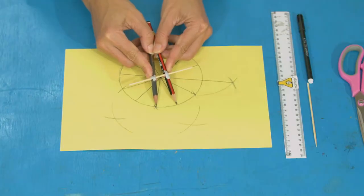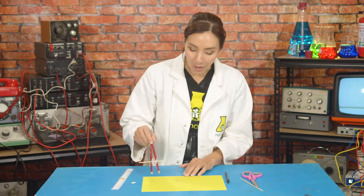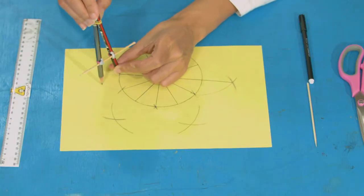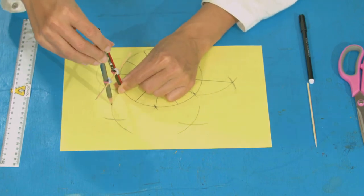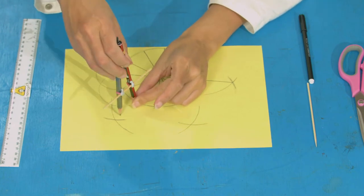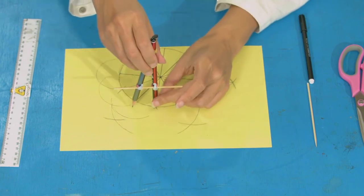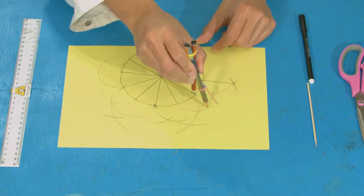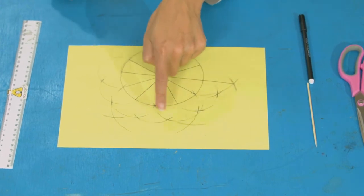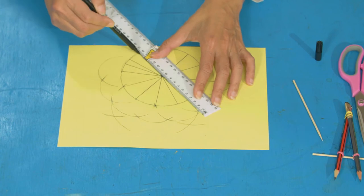We actually want to make 24 segments, so we're going to cut them in half one more time. To do this, we're going to need to change the radius of our compass so it's exactly the distance between two of our lines at the circumference. Now we're going to do the same thing, making arcs outside the circle, working around our top six lines. You should have six new points. Now you're going to join these points up through the middle, just like before.